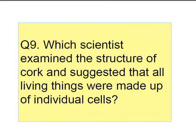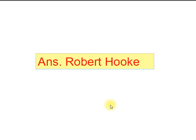Question number nine: which scientist examined the structure of cork and suggested that all living things were made up of individual cells? The answer is Robert Koch. He examined the dead cells which resembled cell compartments like the honeybee structure, and he gave the term 'cell' and reported his findings in the book Micrographia.